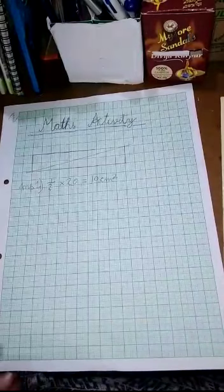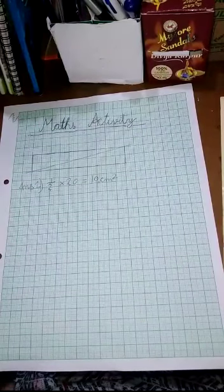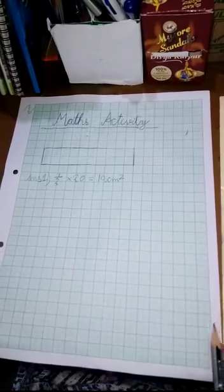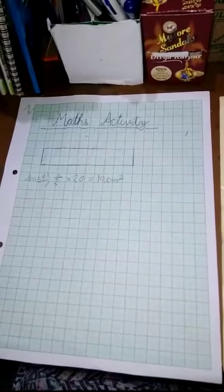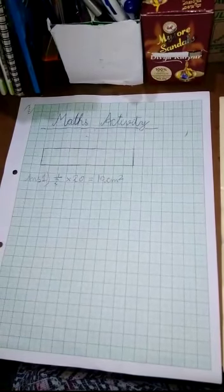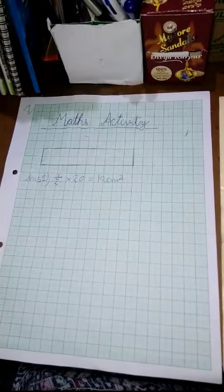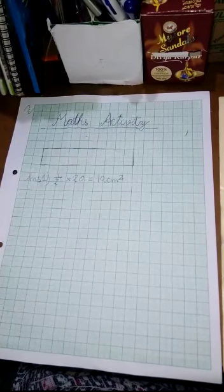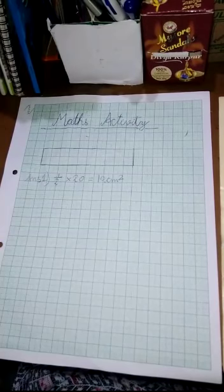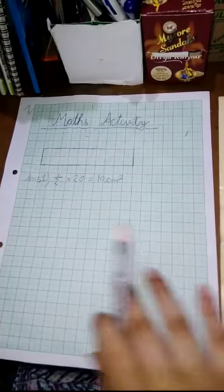Now our next question: draw one straight line in this rectangle to divide it into two equal rectangles. What is the area of each of the smaller rectangles?